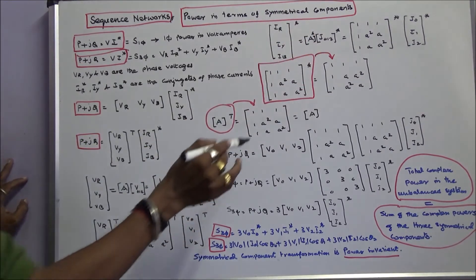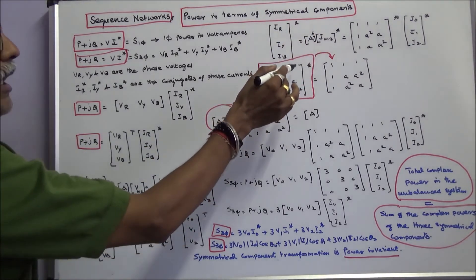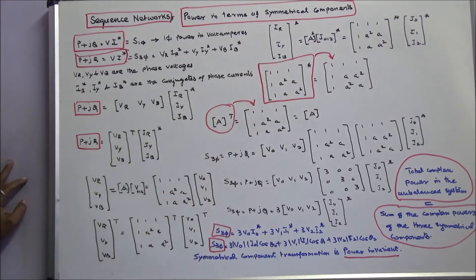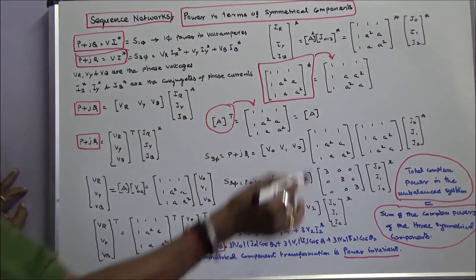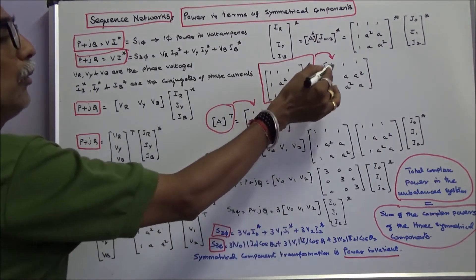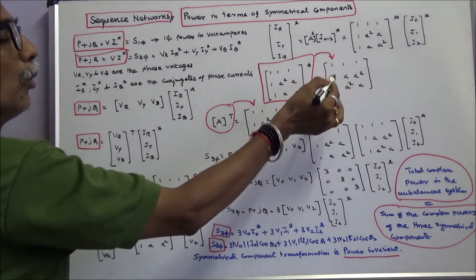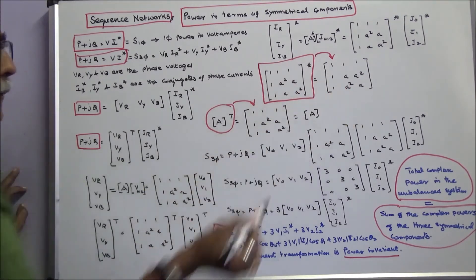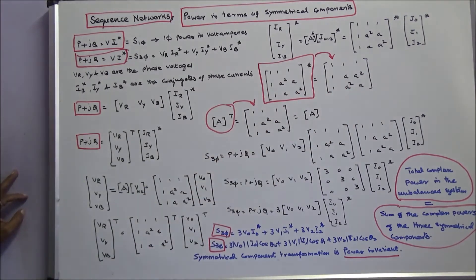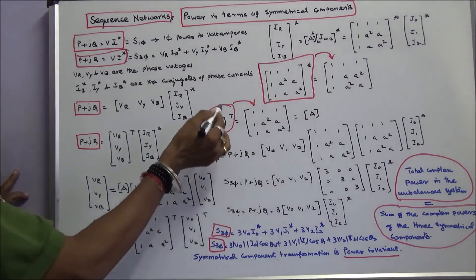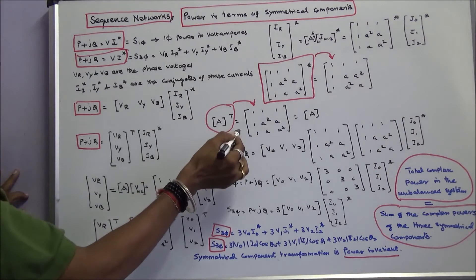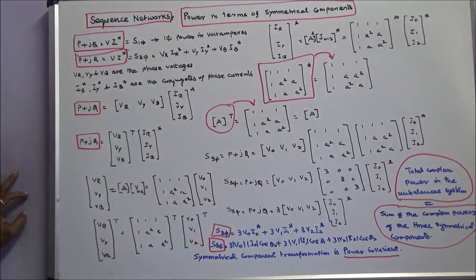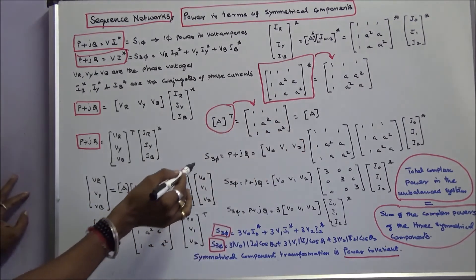The A conjugate matrix is equal to: [1, 1, 1; 1, 1, A squared; 1, A squared, A]. It is also shown that A transpose matrix equals A matrix.